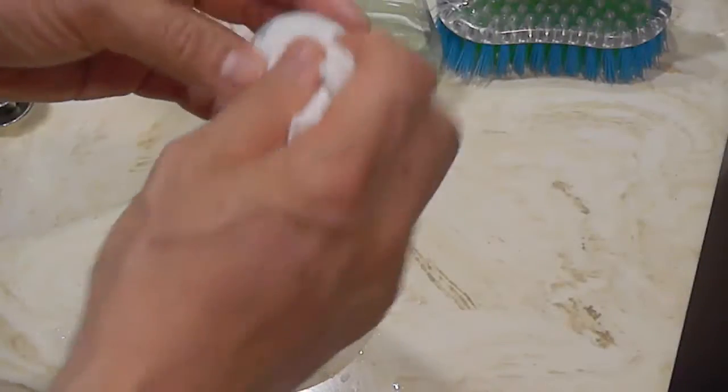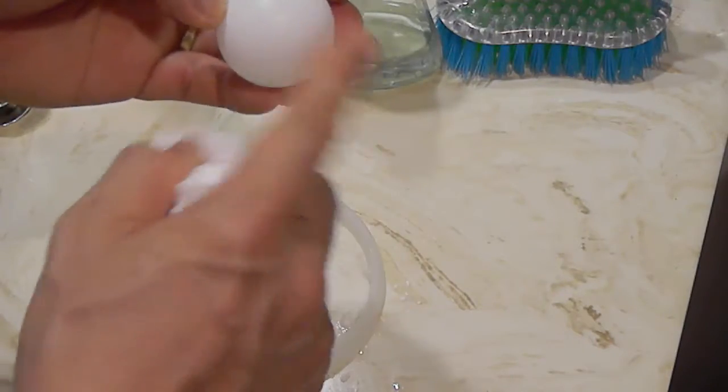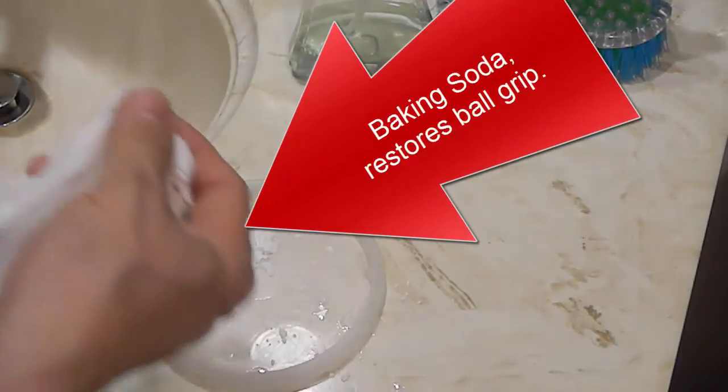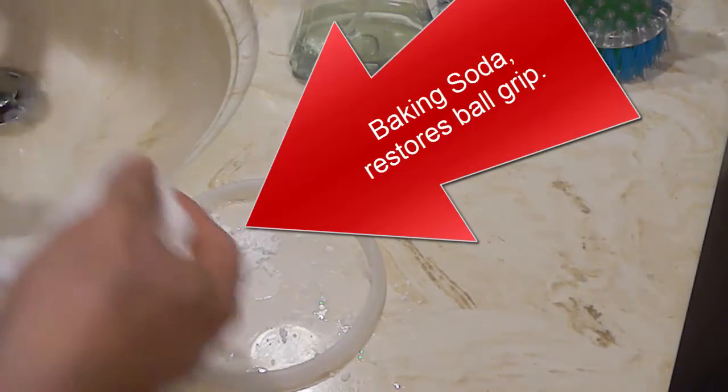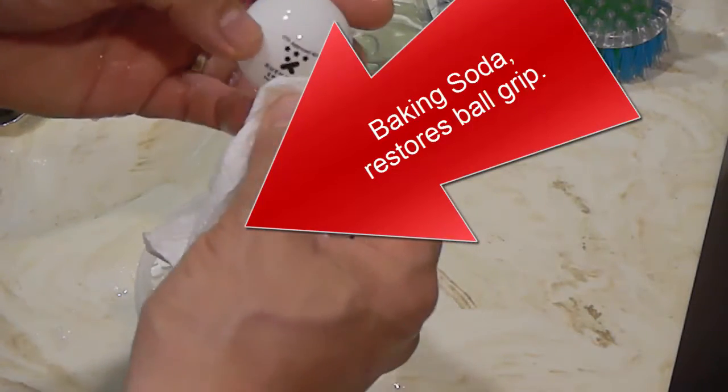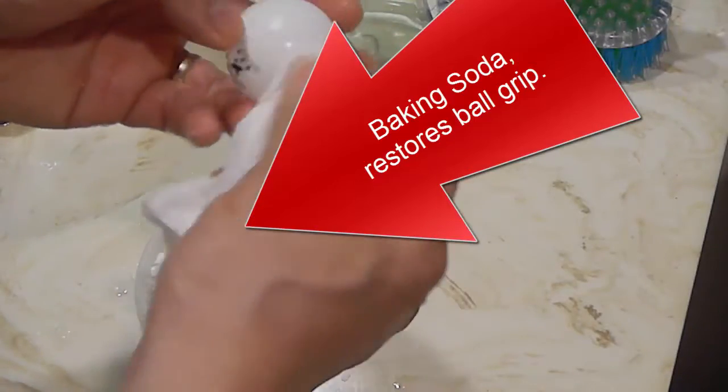Because you're using just a kitchen towel, it's not going to hurt the original surface or make it too smooth, as if you used an abrasive kitchen pad.